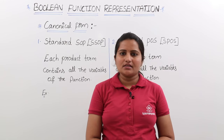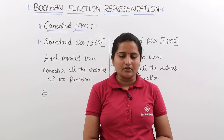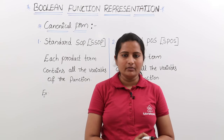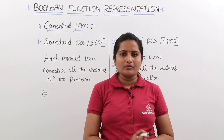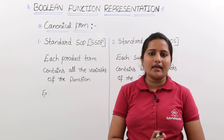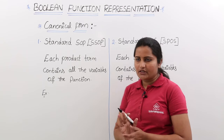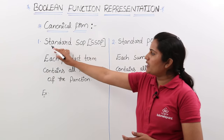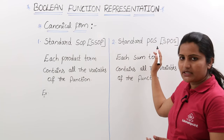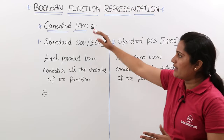In this class we are going to discuss about canonical form representation of a Boolean expression. If you want to represent any Boolean expression in terms of canonical form, you have two forms — two classifications in canonical form: standard SOP and standard POS form. These are the two subforms in canonical form.